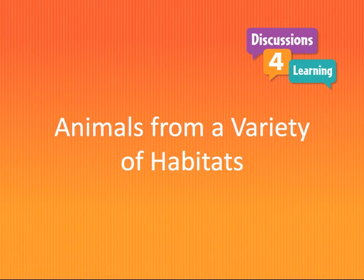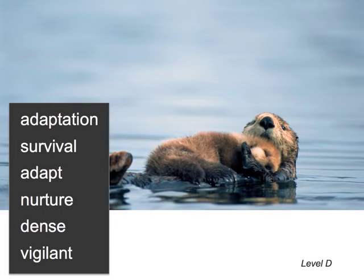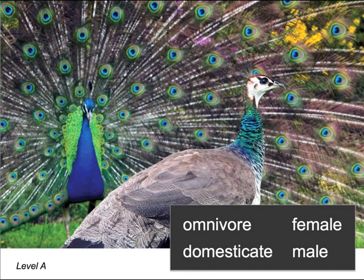Students will discuss brilliant images of animals from a variety of habitats, including this sea otter clasping her newborn pup in the Gulf of Alaska. Students discuss how the sea otter's webbed feet and dense fur are two adaptations that help them survive. In Level A, students discuss the differences between male and female as they view this image of a peafowl in courtship display.